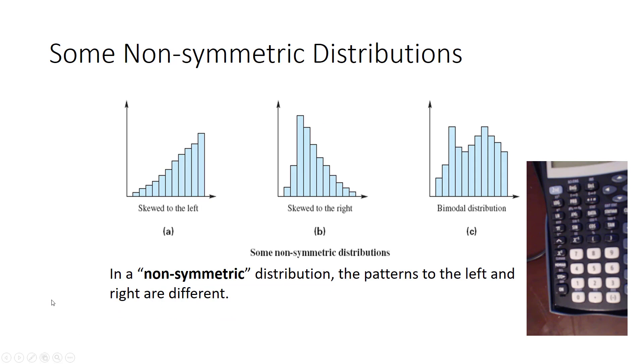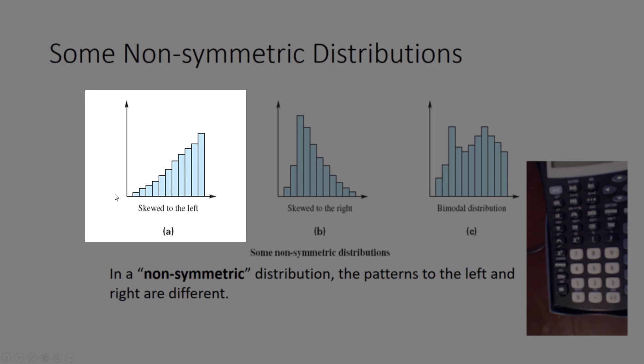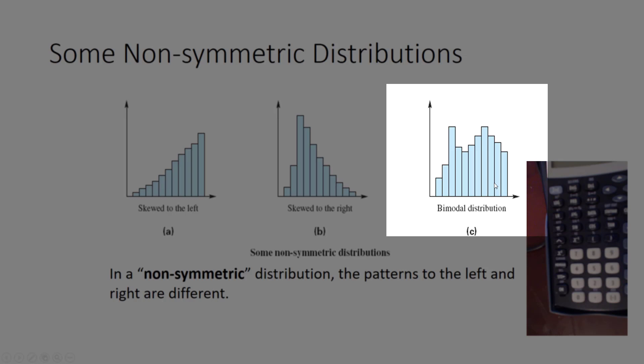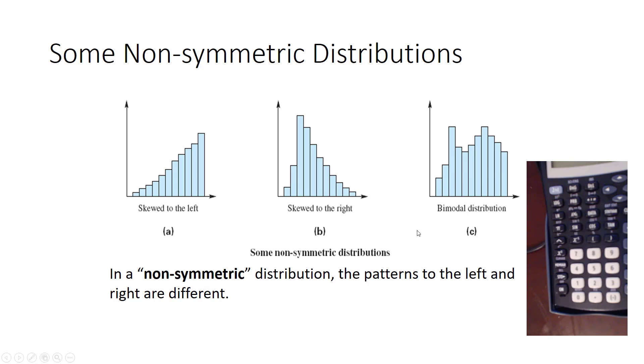Here are some examples of non-symmetric distributions. We have one where the tail of the data goes out to the left, so it's called skewed to the left. The other, the little tail goes out to the right. And here's another bimodal distribution, but it doesn't happen to be symmetric. It's not the same on both the left and right side.